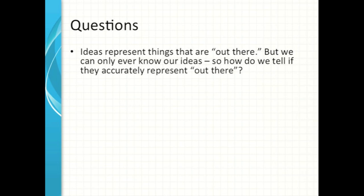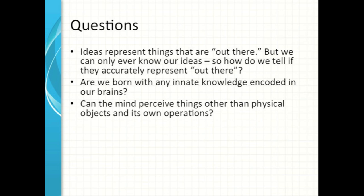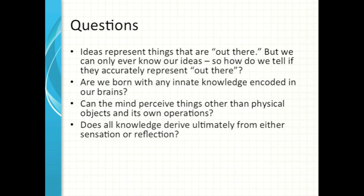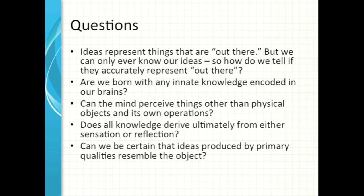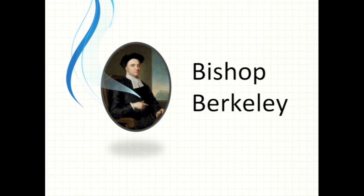Some questions to think about as we leave John Locke and get ready to move on to Bishop Berkeley. Ideas represent things that are out there. The problem is we can only ever know our own ideas. So how can we tell if those ideas that we have accurately represent what's out there? Are we born with any innate knowledge encoded in our brains? Can the mind perceive things other than physical objects and its own operations? Does all knowledge derive ultimately from either sensation or reflection? And finally, can we be certain that ideas produced by primary qualities resemble the object itself? These are all important questions in determining whether or not Locke was correct. Keeping this in mind, let's get ready to move on to discuss Bishop Berkeley.